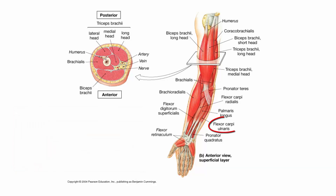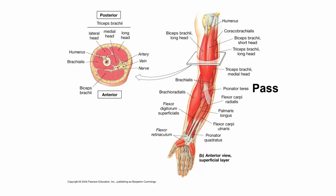The flexor carpi ulnaris flexes the wrist and ulnar deviates the wrist. A good way to remember this group — including the pronator teres — is 'pass, fail, pass, fail': pass for pronator teres, fail for flexor carpi radialis, pass for palmaris longus, and fail for flexor carpi ulnaris.